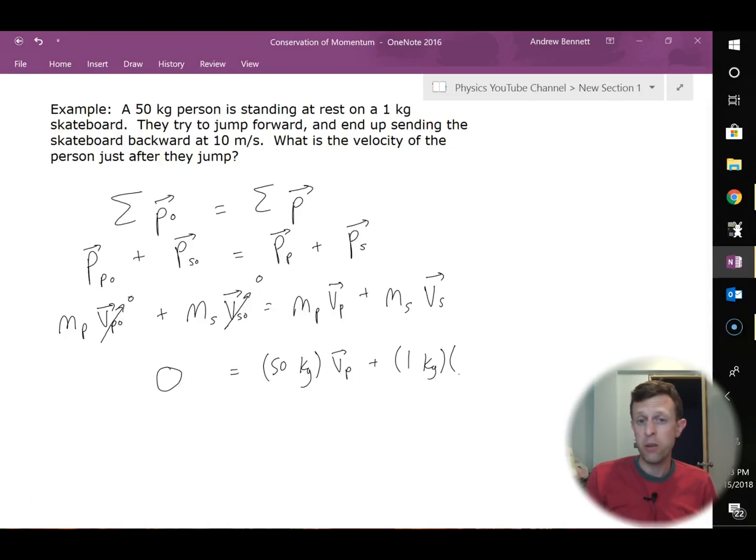And the velocity of the skateboard is given at 10 meters per second. I notice that that's backward. I'll go ahead and say forward is positive, backward is negative, so I'll put that as a negative 10 meters per second. I would expect, then, that I should get a positive number for the person's velocity, indicating that they are moving forward, even if it's just a little bit, that they should be moving forward and not backward. Because I know that two negatives can't add up to zero. I have to have a negative and a positive to add up to zero.